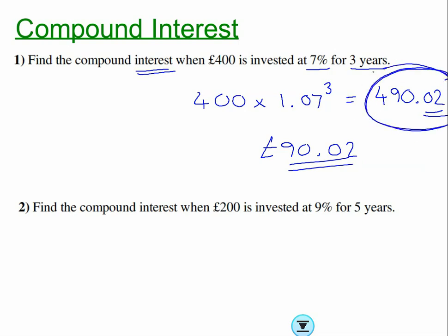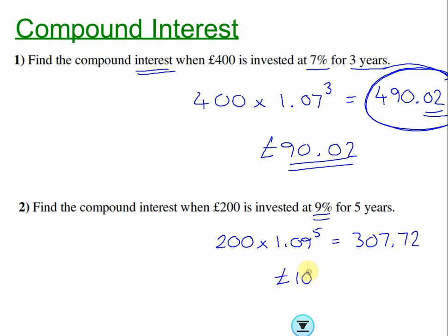Very similar question, just different numbers. £200 times the percentage multiplier 1.09 — a nine percent increase — raised to the power of five, because it's kept in for five years. 200 × 1.09^5 gives £307.72, which means the interest earned is £107.72.